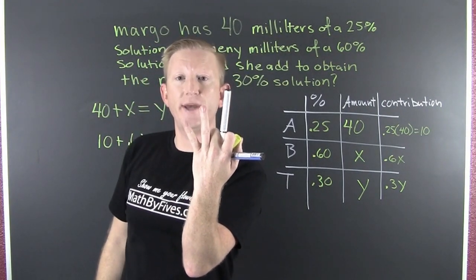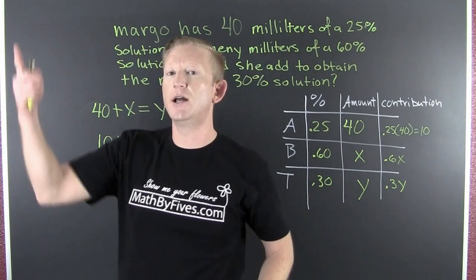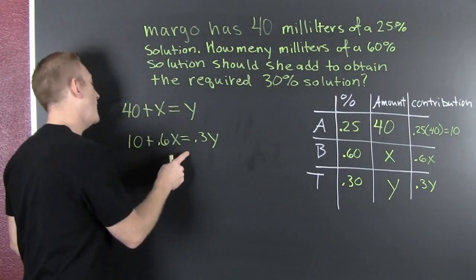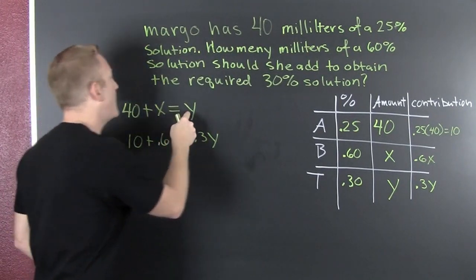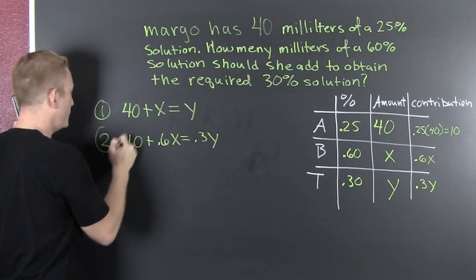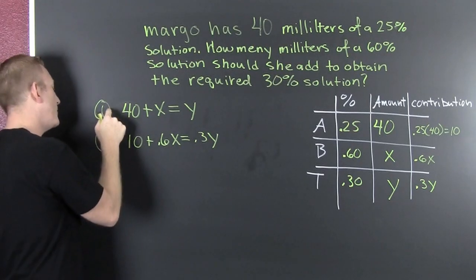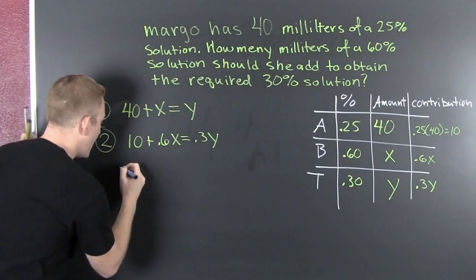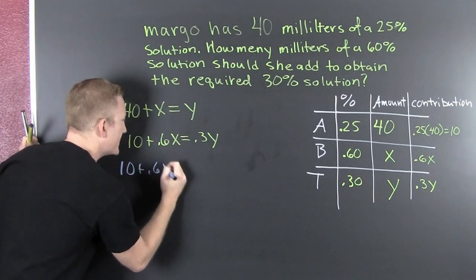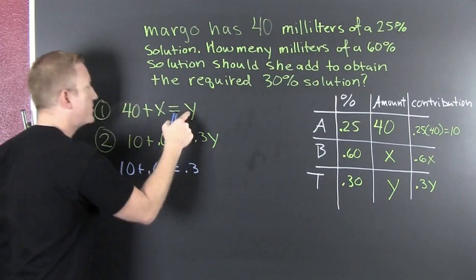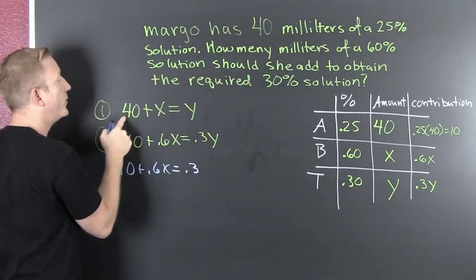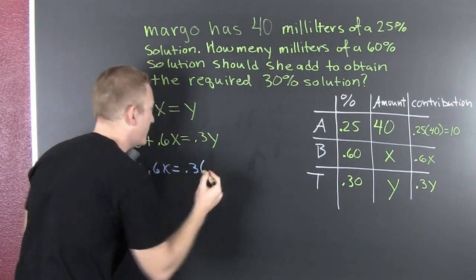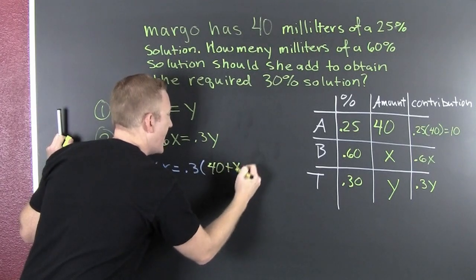We have three legitimate ways to solve a system of equations: substitution, elimination, and graphing. I recommend substitution because equation one is already solved for Y. So I'll put equation one into equation two: 10 plus 0.6X equals 0.3 times Y, where Y is 40 plus X.